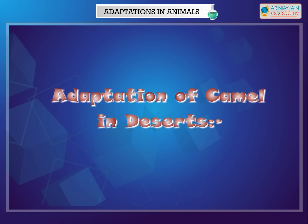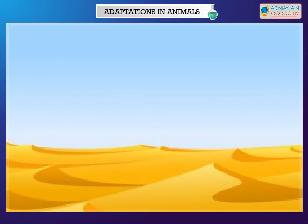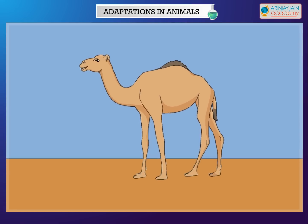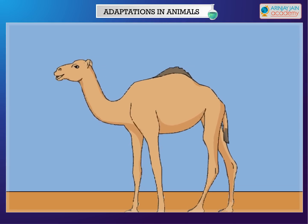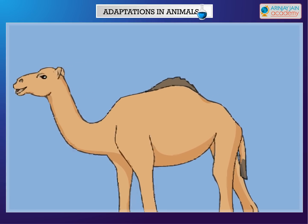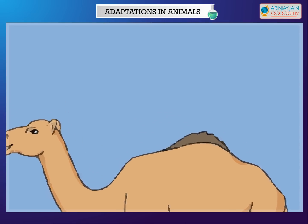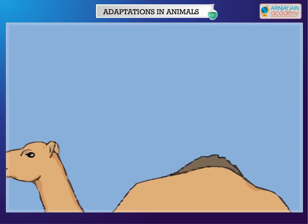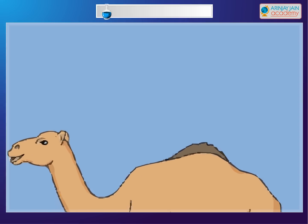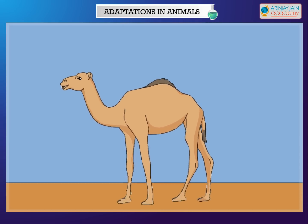Adaptation of Camel in Deserts. Deserts are very hot during the day and very cold at night. Camels live in desert. A camel has a thick skin and scanty hair to protect itself from the extreme hot and cold temperatures. It can survive without food and water for many days because it can store food in the form of fat in their humps. They can also store water in their stomachs.